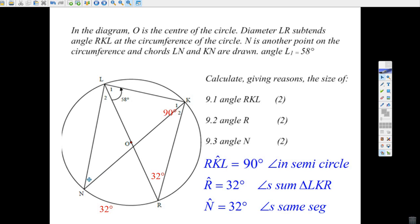The last angle N subtends, opens up to the same segment. It opens up to the same segment. Look at that. Of the circle. Okay, so it must be 32 degrees.